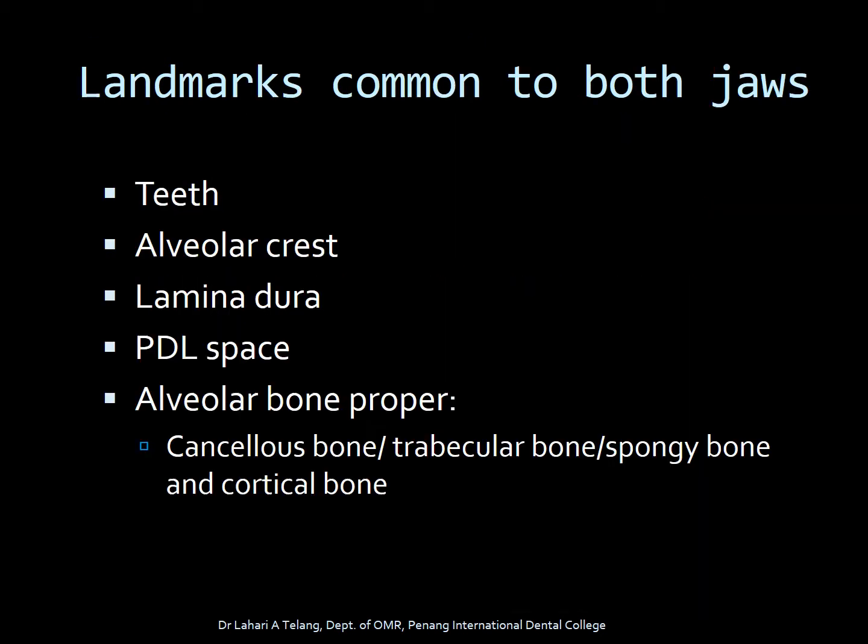The landmarks common to both jaws would be teeth, alveolar crests, lamina dura, PDL space, and alveolar bone proper — which consists of cancellous bone and the cortical bone.